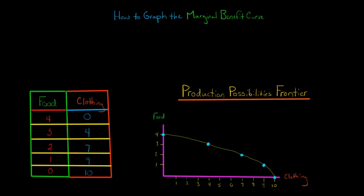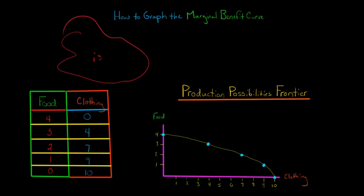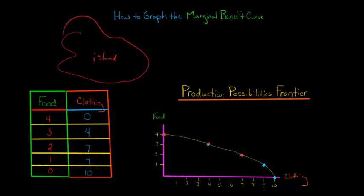In this video, we're going to discuss how to graph the marginal benefit curve. When we were doing our production possibilities frontier earlier, we were identifying the maximum amount of food and clothing that an economy could produce given the resources currently available. We had given an example where we were stranded on an island, trying to determine how much food and clothing we would produce. We plotted out these points and got our production possibilities frontier — all the different combinations, the maximum amount of food and clothing we could produce given our current resources. Each point along this curve was efficient.